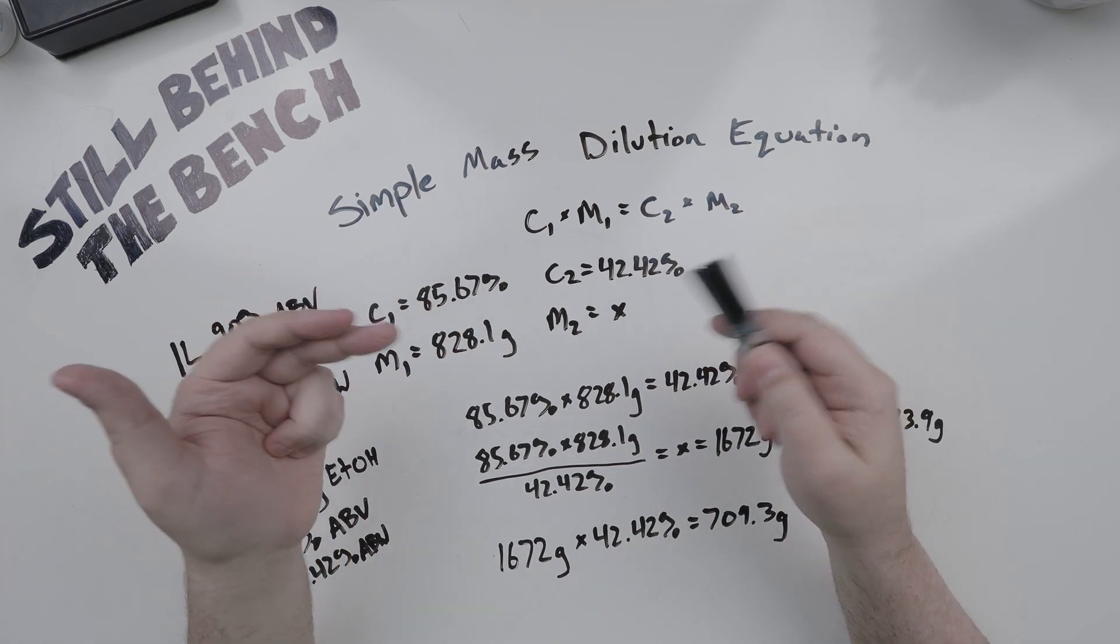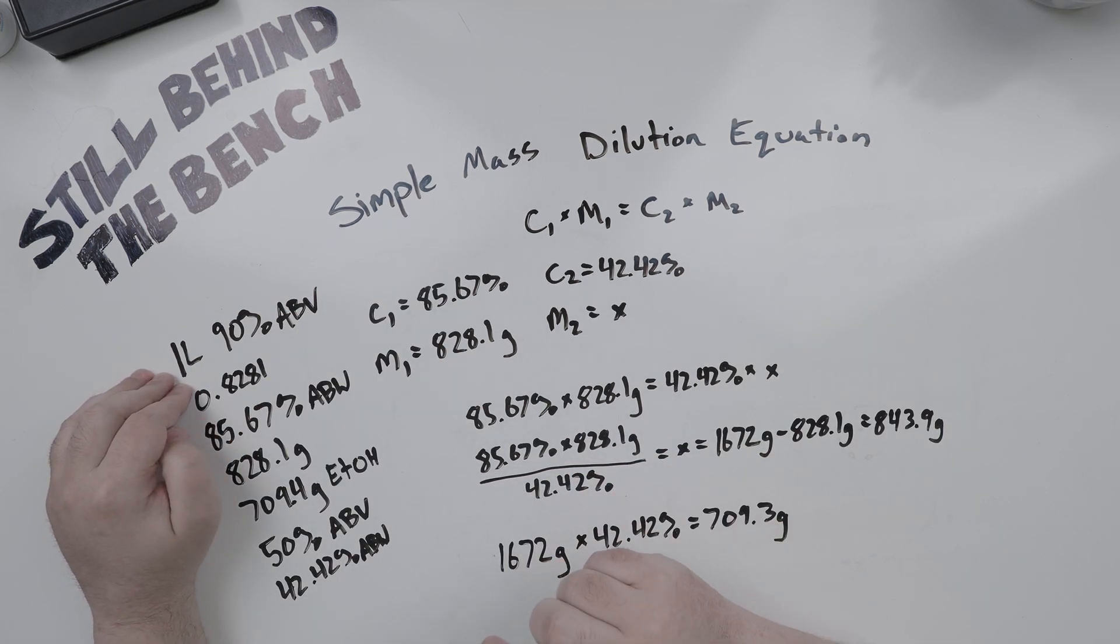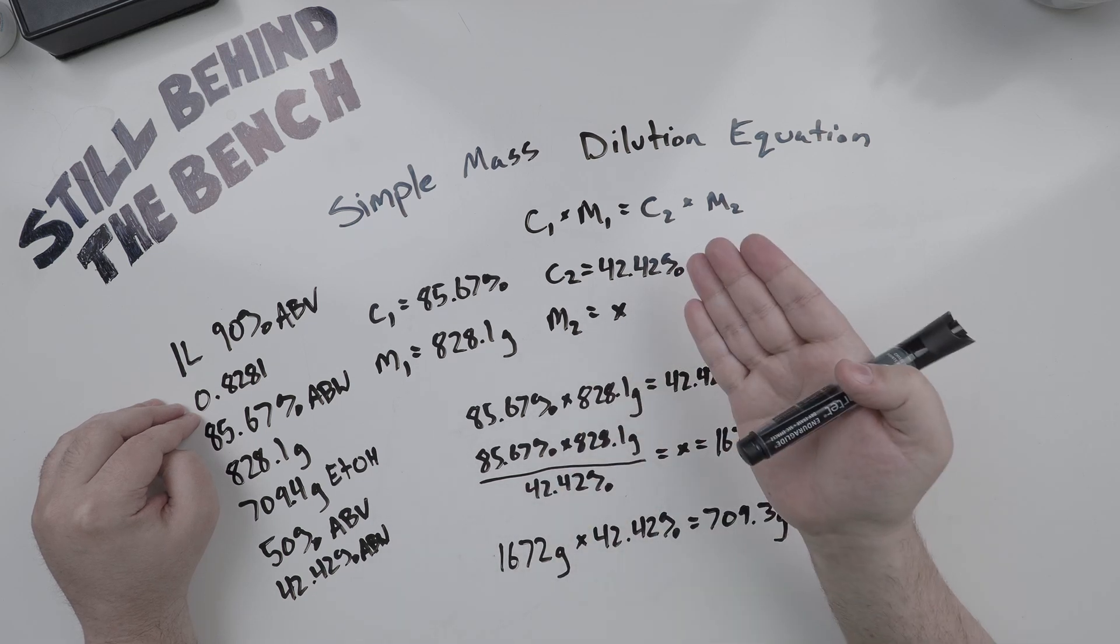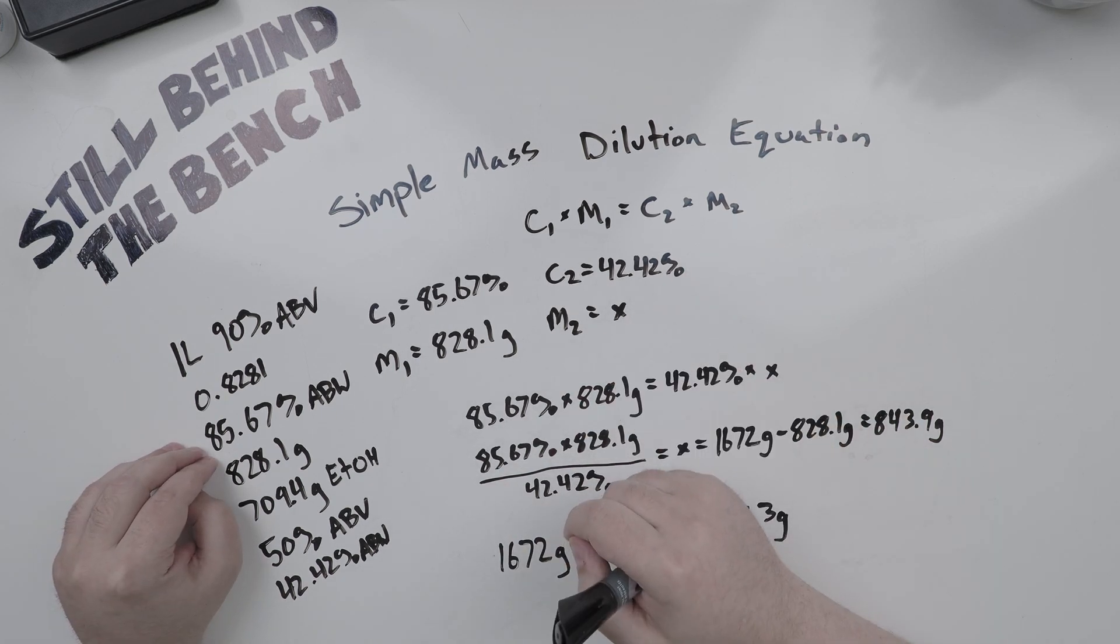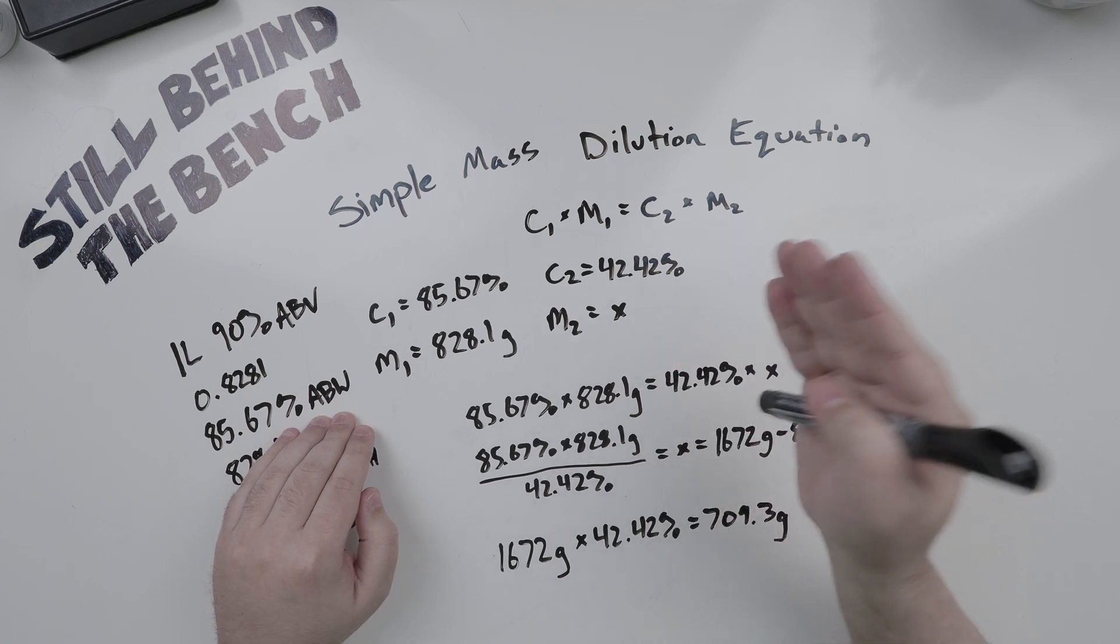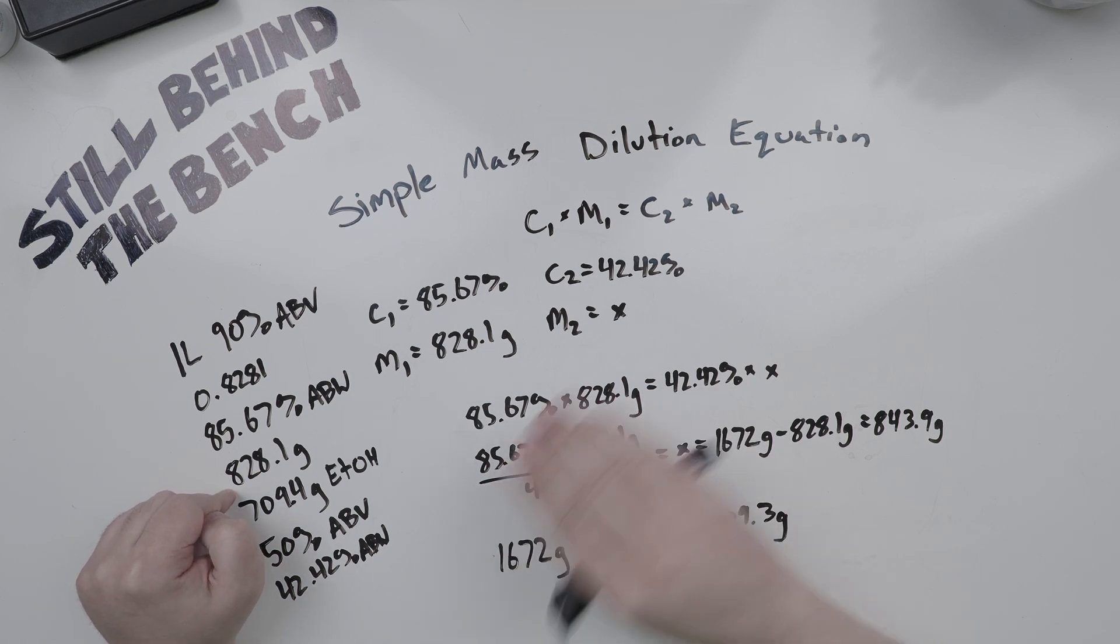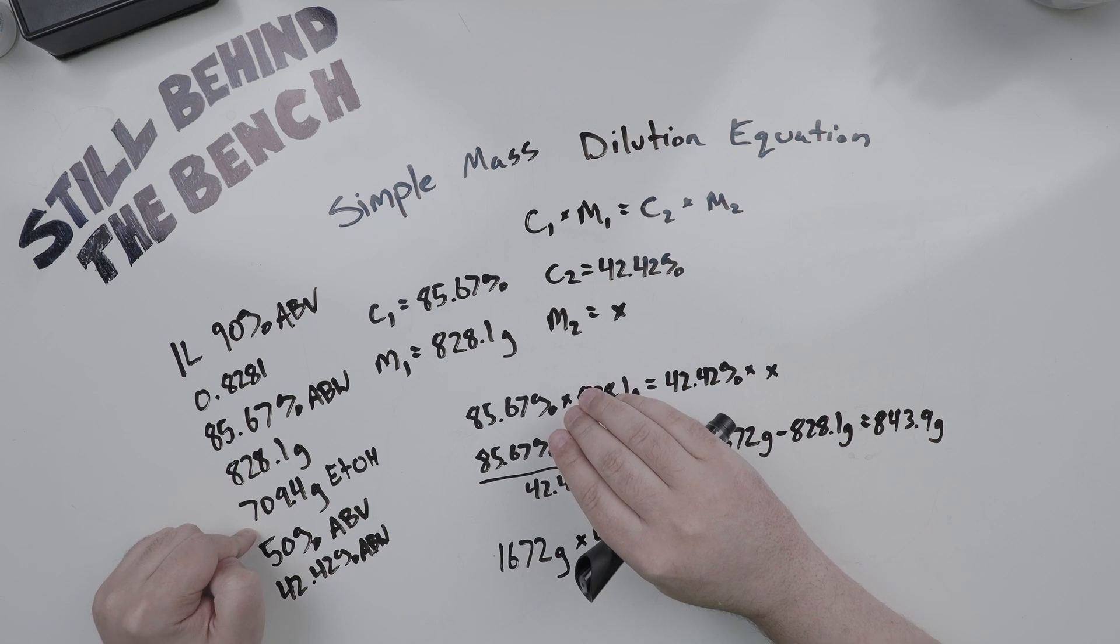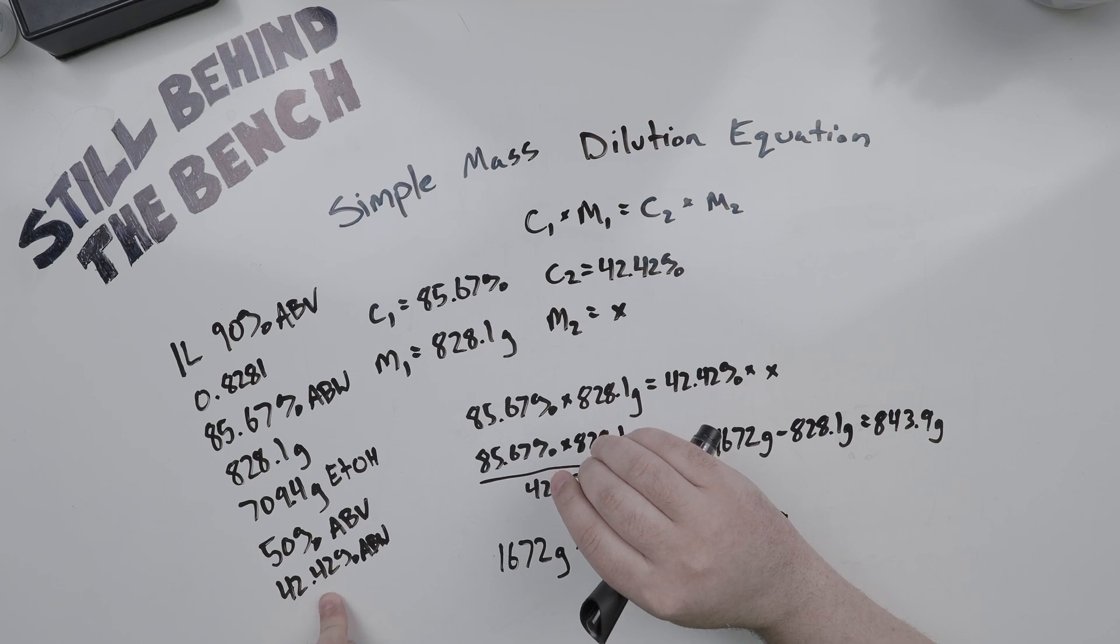Then we can go to the 1996 Canadian alcoholometric laboratory table, which has density, volume, and mass all at 20 degrees Celsius. Let's say we start with one liter at 90% ABV. That's a specific gravity of 0.8281, density of 828.1 grams per milliliter. Using the table, that means we have 85.67% ABW, the alcohol by weight. That means we have 828.1 grams of total solution, and 709.4 grams of that is ethanol.